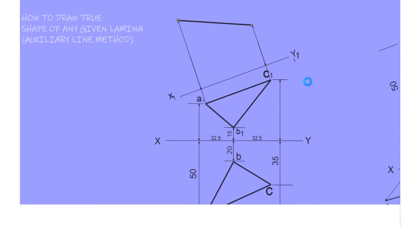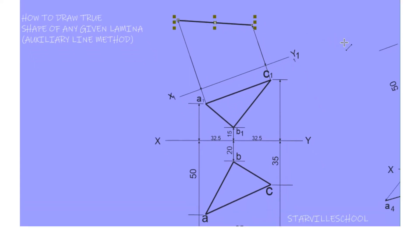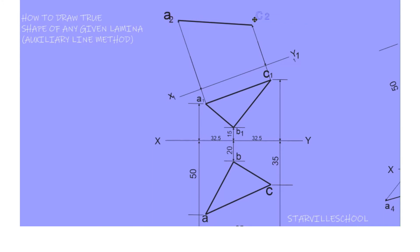That line now represents the true length of line A1C1. You outline it and name the points — you can call them point A2 and point C2. Naming is very important.